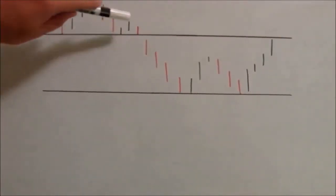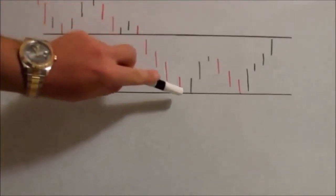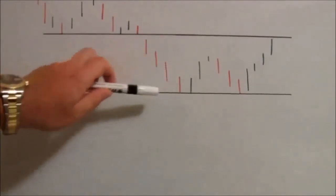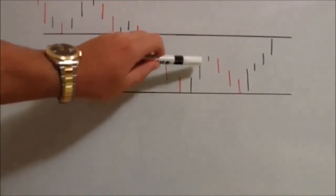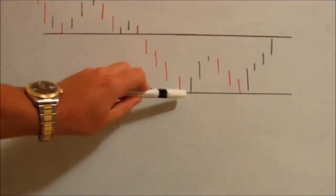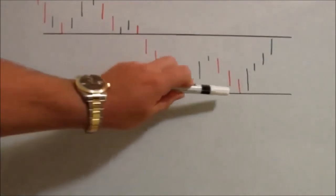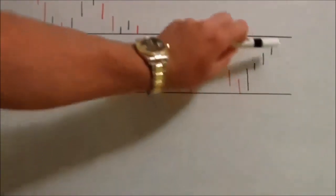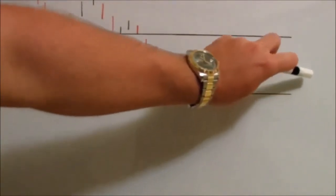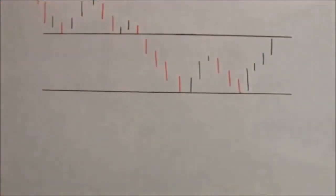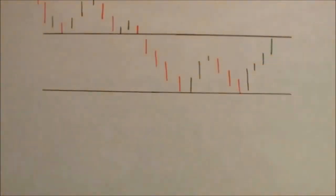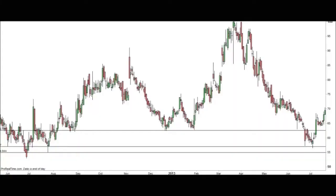Let's quickly recap. When drawing horizontal buy lines, we need to look for the lowest point of down moves — the market must bounce after. You then need a second low point at the same price; it doesn't work with just one low point. Once you've got two low points in the same price area, draw a line across and extend it outwards. If the market comes down and touches that line, that is the price at which we want to buy shares.